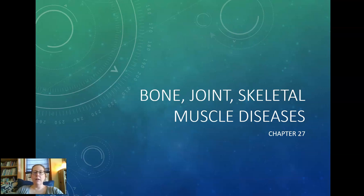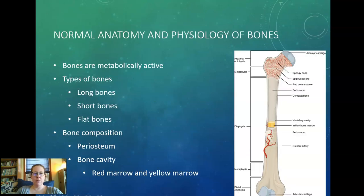Hi people, here's your bone joint skeletal muscle disease chapter, which is chapter 27 for clinical chemistry. Let's review a little bit on the normal anatomy and physiology of bones — just a quick review.